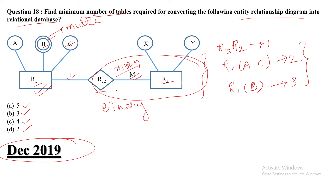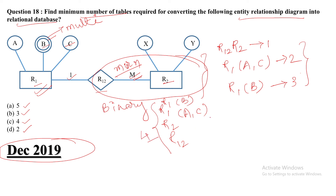So the minimum number of tables is 3 and the maximum number of tables is 4. The maximum of 4 comes from: R1 with AC, R1 with B, the combined R1-R2 table, and R2 separately. The minimum of 3 is when R2 is merged into the relationship table.